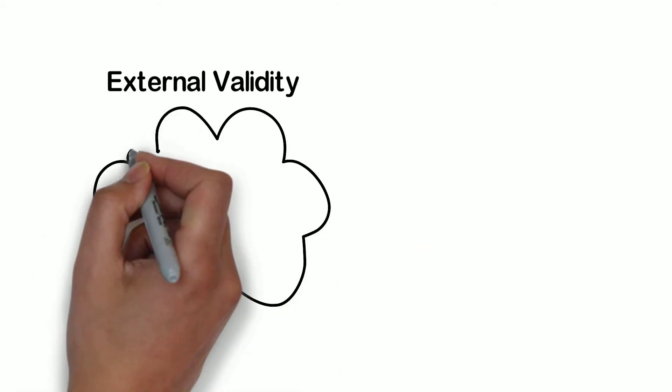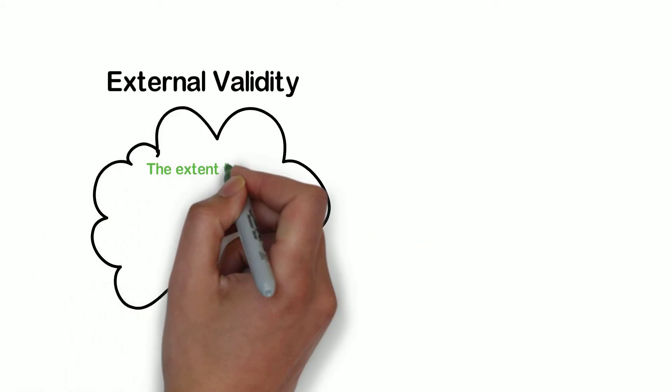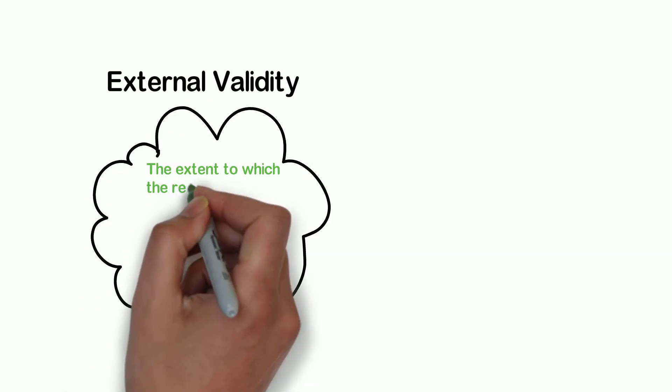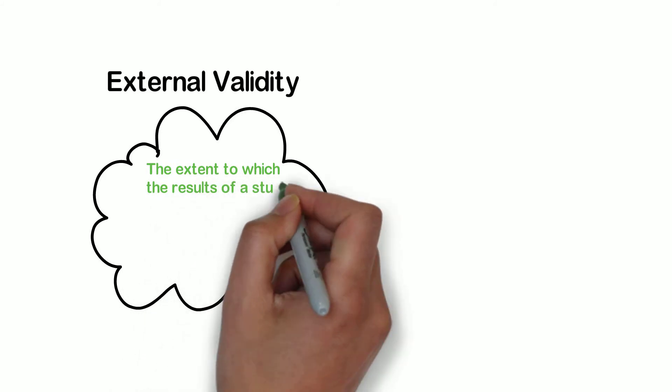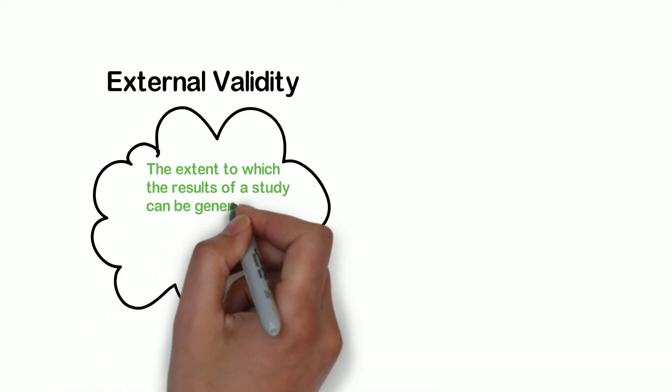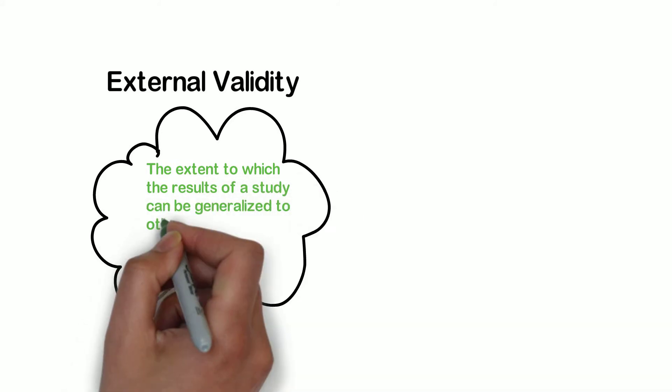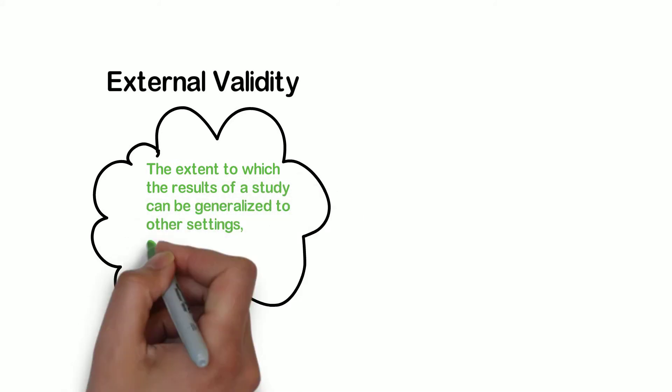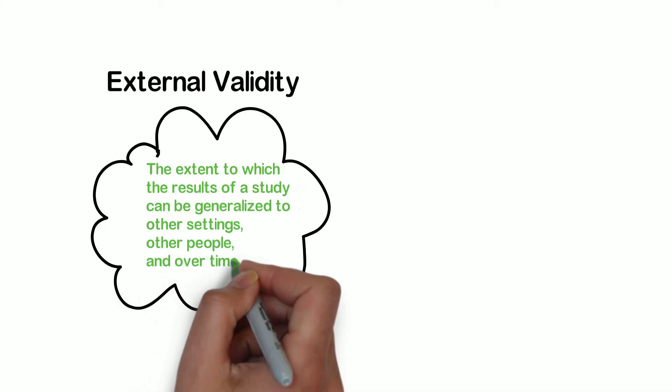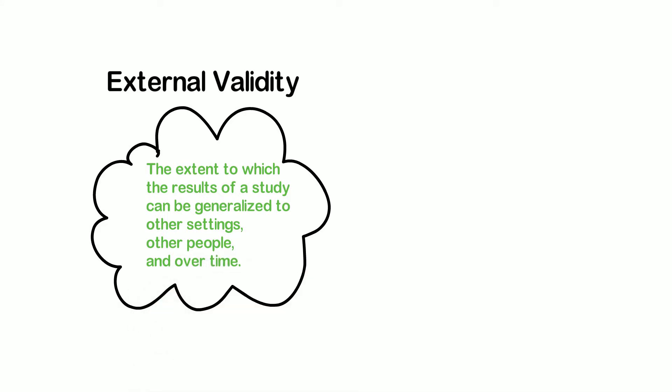Another term very often used for experimental studies is external validity. External validity refers to the extent to which the results of a study can be generalized to other settings, other people, or over time.